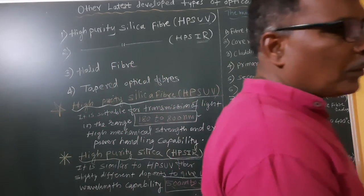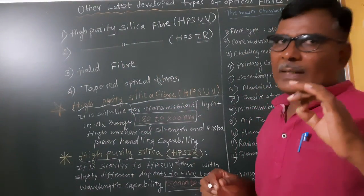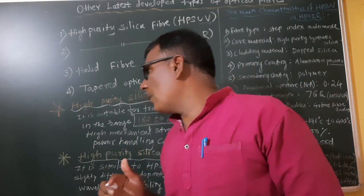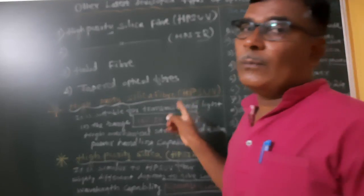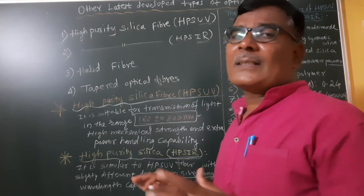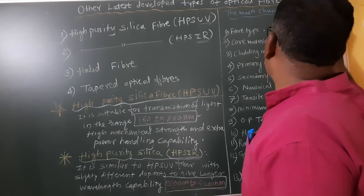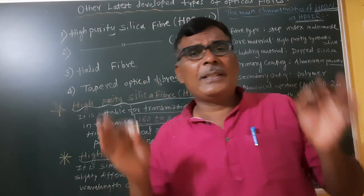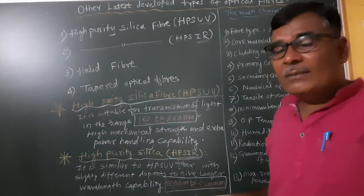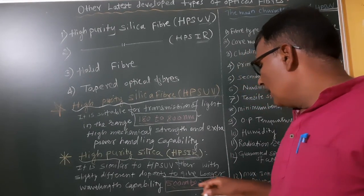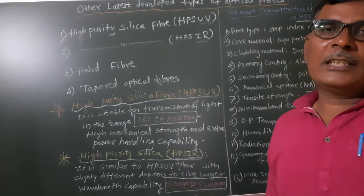These two points are very important — multiple choice questions may be asked on them. The main difference between HPSIR and HPSUV is the high transmission wavelength range. HPSUV has a wavelength range of 180 nanometers to 800 nanometers, while HPSIR has a wavelength range of approximately 500 nanometers to 2600 nanometers. Remember these two conditions.